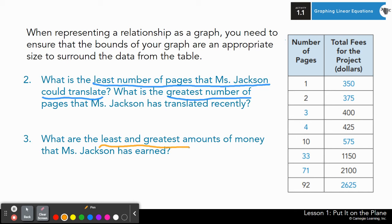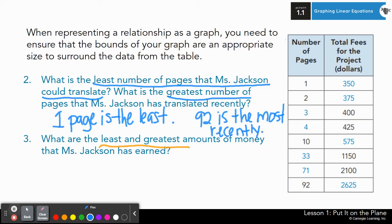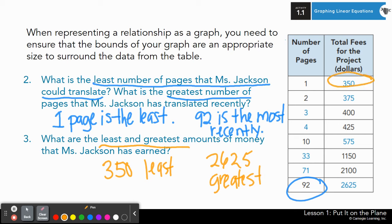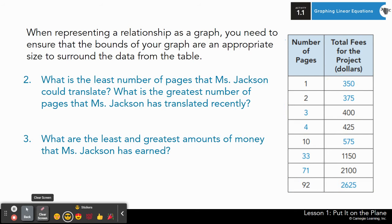Alrighty, one minute is up. Let's compare answers. For number two, one page is the least amount that she can translate. And 92 is the most that she's translated recently. For number three, $350 is the least amount she would make translating one page. And $2,625 is the greatest amount when she translated 92 pages. If your answers match mine, go ahead and give yourself a smiley.